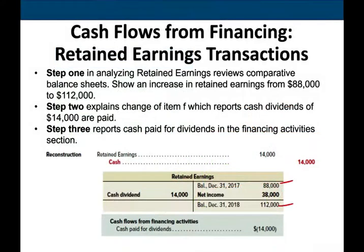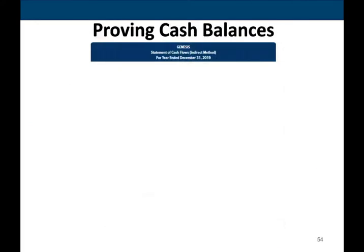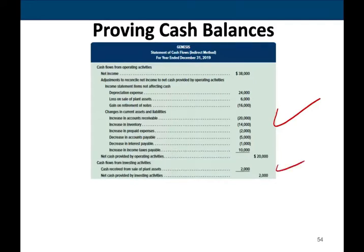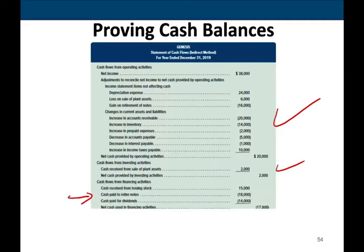In analyzing retained earnings: beginning $88,000, ending $112,000, net income of $38,000 was given, dividend of $14,000 was given — but we could figure out any of these if given three of the four. The journal entry to pay the dividend reduces retained earnings. The three steps: find the change in retained earnings, explain the change, and cash paid for dividends equals $14,000. Now we are done with the financing section.